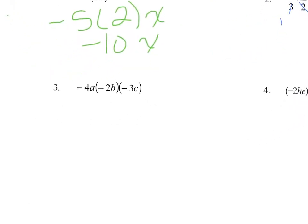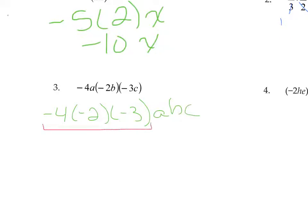On number 3, we have a lot of factors: negative 4 times a, negative 2 times b, negative 3 times c, but the operation between all of these is still multiply. So again, we're just going to bring the coefficients to the front: negative 4 times negative 2 times negative 3, and the variables to the back: a, b, c. How many negatives are there? Negative times negative times negative gives us a negative. 4 times 2 is 8, 8 times 3 is 24. So this is negative 24abc.